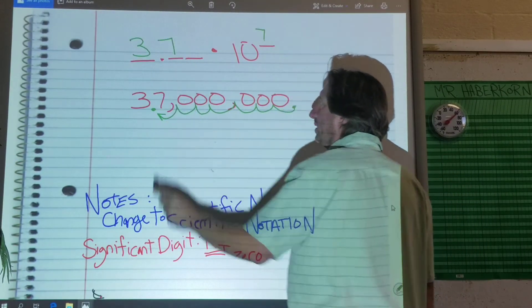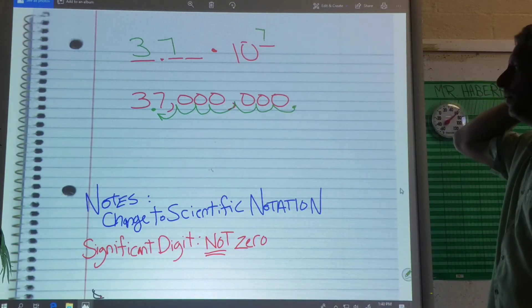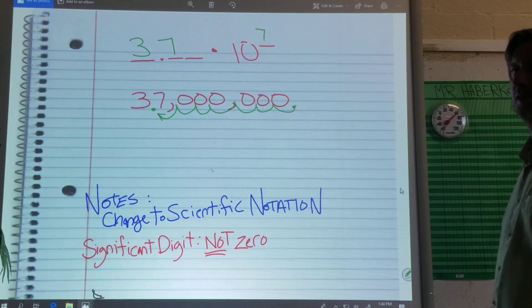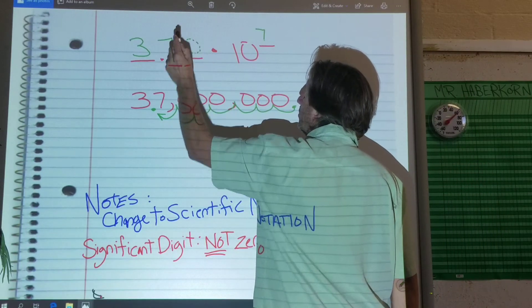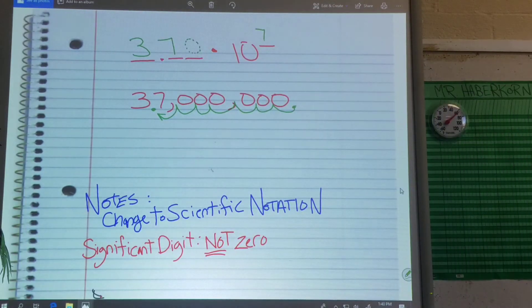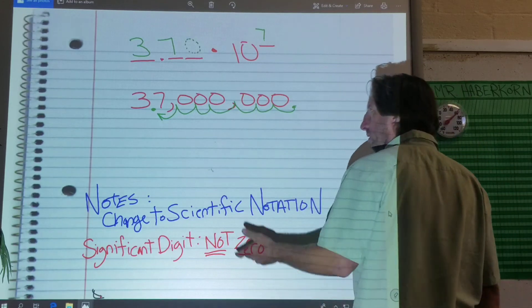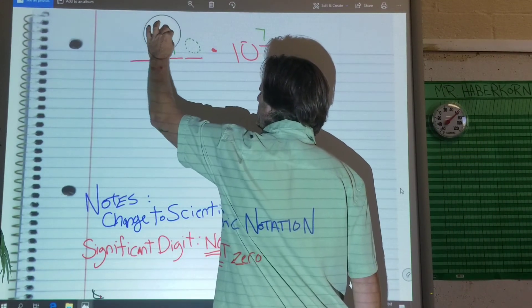Now, I don't need to write the zero at the end. 3.7 means the same as 3.70. So you may see that zero written there. You probably won't, because you don't need it. They mean the same thing. 3.70 is the same as 3.7. So they mean the same thing. So you don't have to put the zero, if it's at the end. Let's do one more, and we'll have you guys try some.